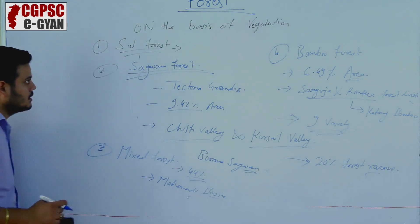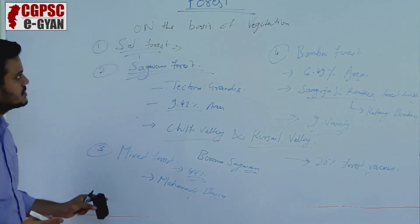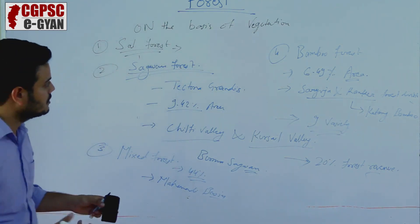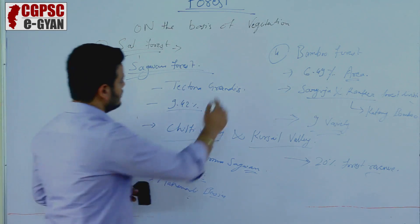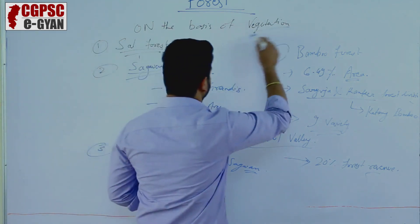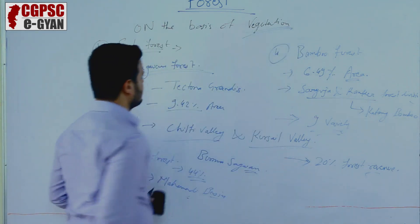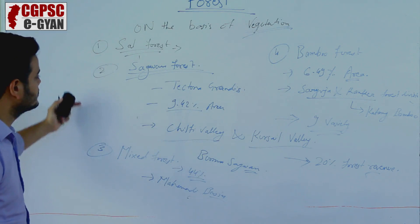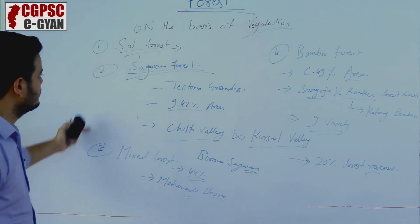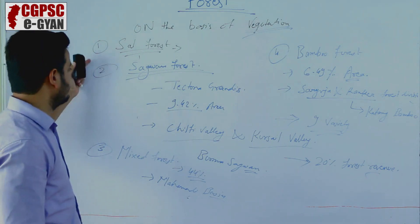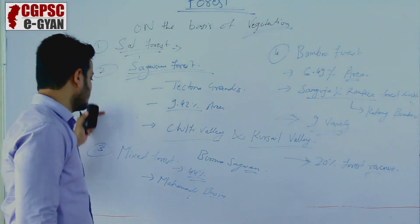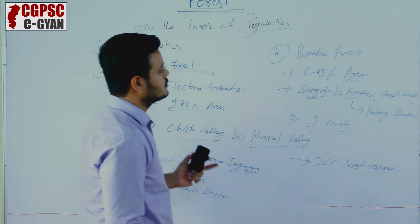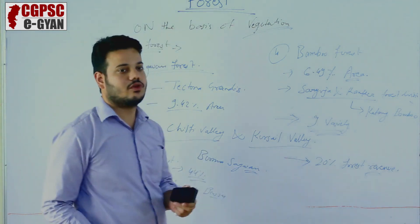So this is the classification of forest on the basis of vegetation. Four types: first, Sal forest; second, Teak (Saugan) forest; third, mixed forest; and fourth, bamboo forest.